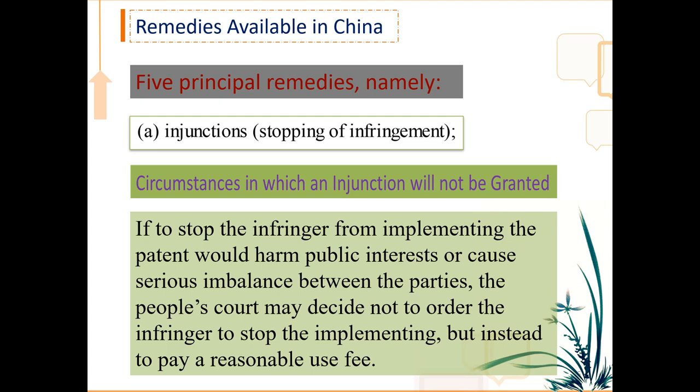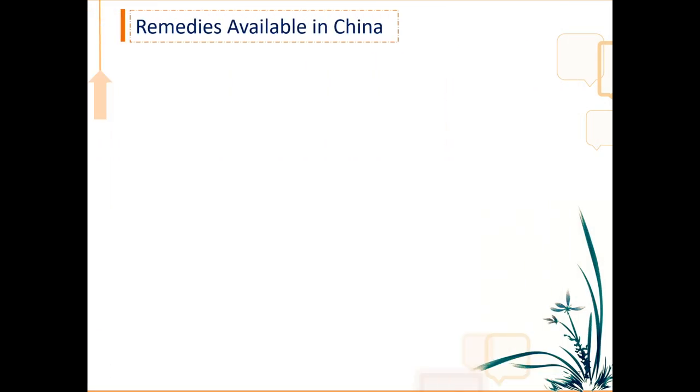But there are circumstances in which an injunction might be refused by the court. For example, if stopping the infringer from implementing the patent would harm public interest or cause serious imbalance between the parties, the courts may decide not to order the infringer to stop implementing, but instead to pay a reasonable use fee. Number two: claims for reasonable remuneration for pre-grant use.